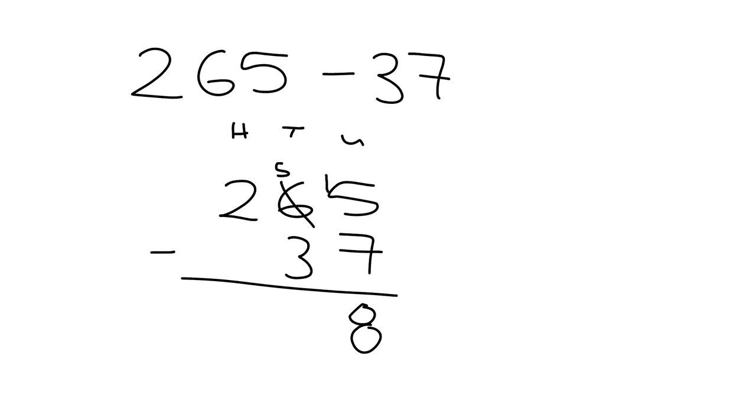Then we say 5 tens minus 3 tens leaves us with 2 tens. And then we have here 2 hundreds minus no hundreds. That leaves us with 2 hundreds. And so our answer is 228.